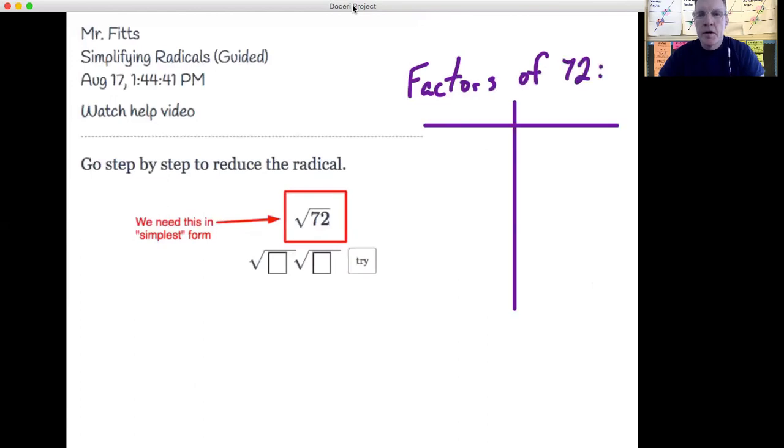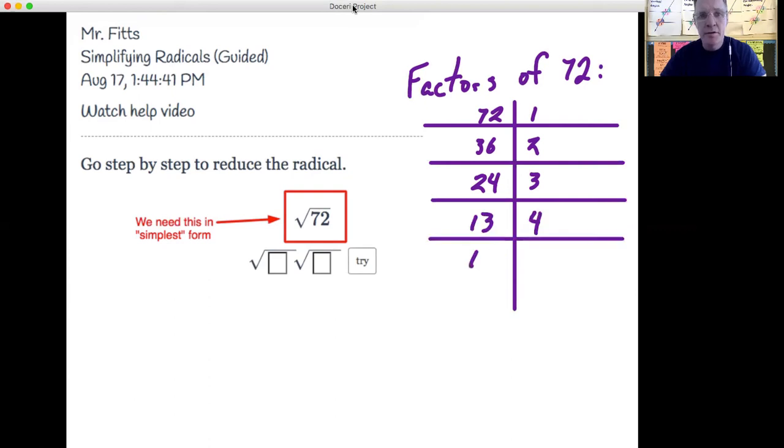The other way I like to think about this is just creating a table of all of the factors of 72. So for example, 72 is divisible by 2. It's even, right? So 2 times 36 is 72. It's also divisible by 3, right? 7 plus 2 is 9. So 24 times 3 is 72.